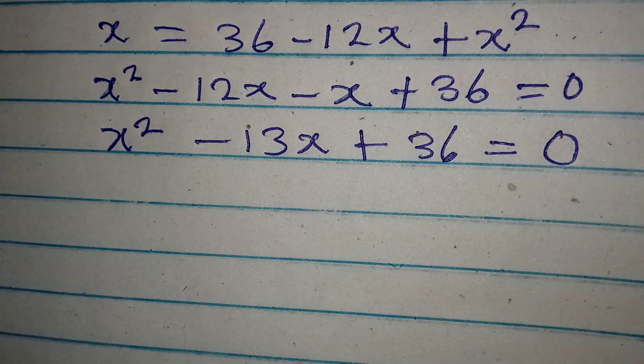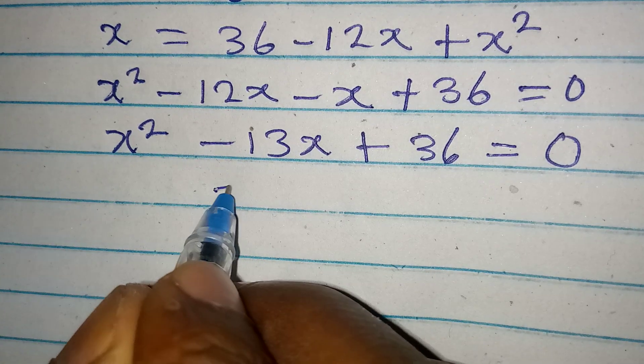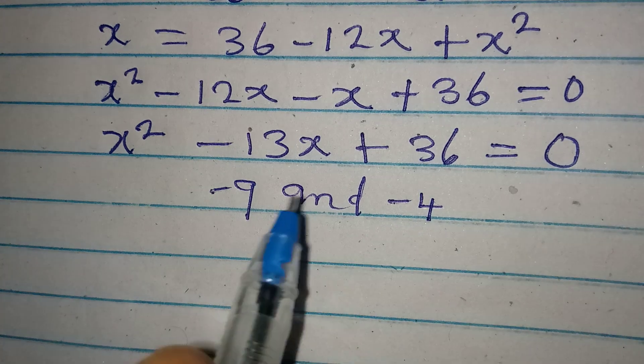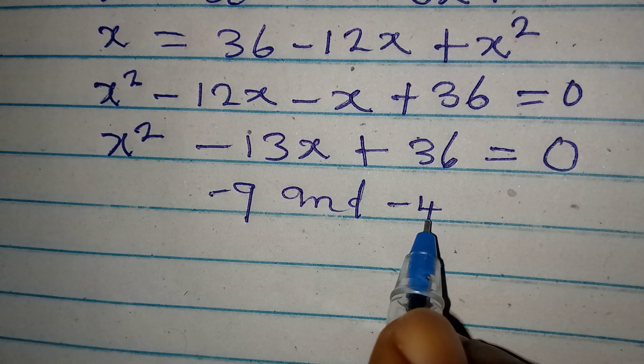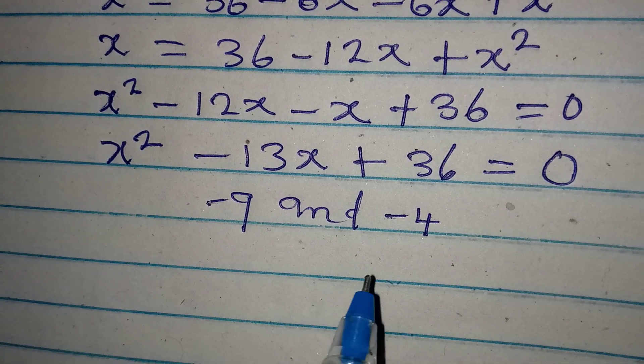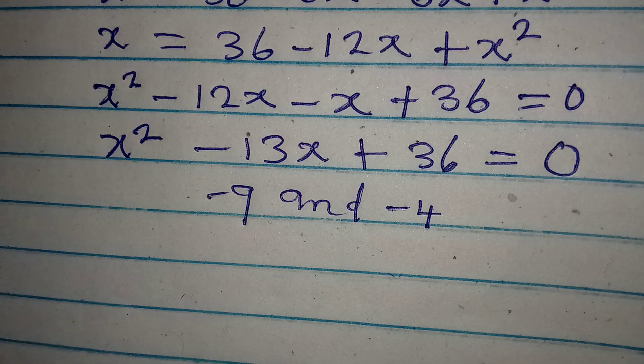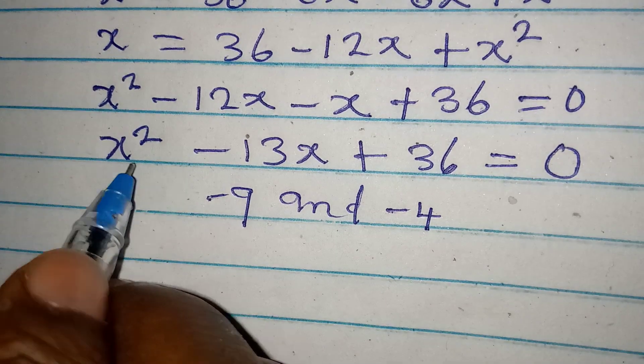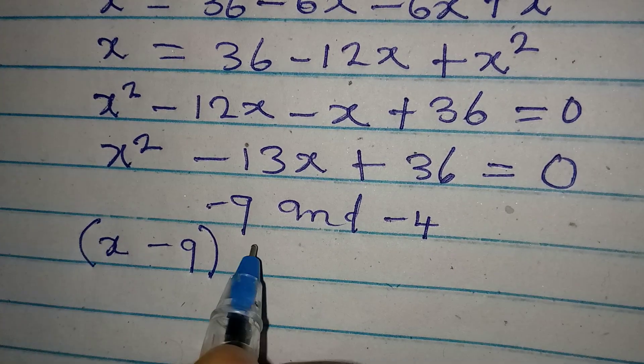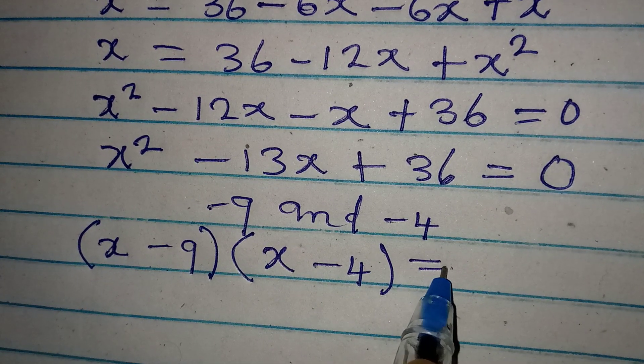If we're going to factorize this, we're going to pick out minus 9 and minus 4, because minus 9 plus minus 4 will give us minus 13, then minus 9 times minus 4 will give us plus 36. This means that the factors of this equation will be x minus 9 and x minus 4 equal to 0.